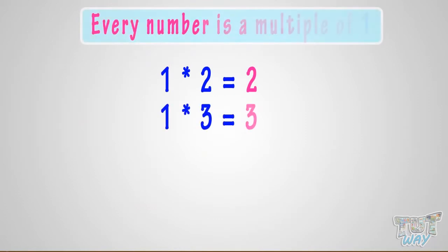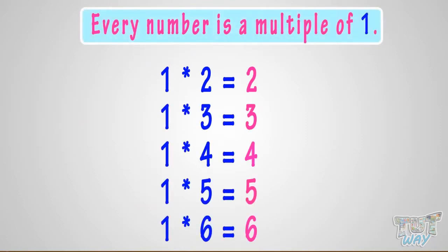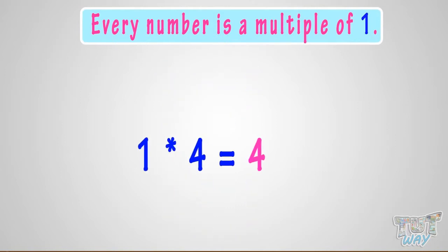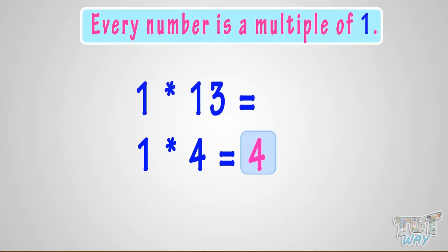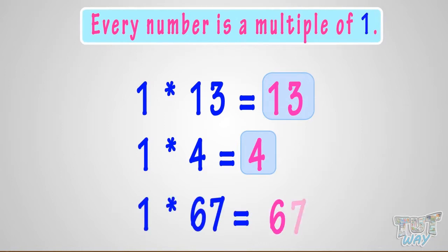Also remember, every number is a multiple of 1, or every number comes in the table of 1. Like, 1 multiplied by 4 is 4, so 4 is a multiple of 1. 1 multiplied by 13 is 13, so 13 is a multiple of 1. 1 multiplied by 67 is 67, so 67 is a multiple of 1.